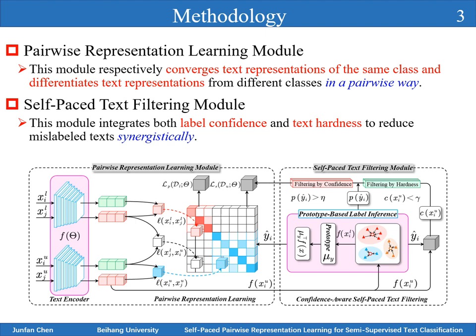To overcome these two problems, we propose a self-paced pairwise representation learning model. Concretely, we design a pairwise representation learning module to respectively converge text representations of the same class and differentiate text representations from different classes in a pairwise way.